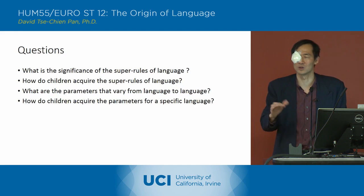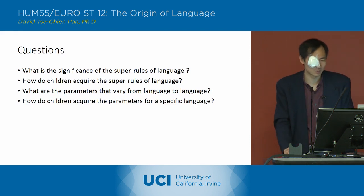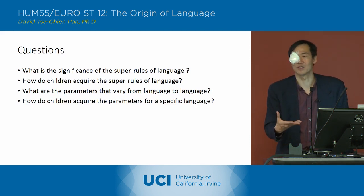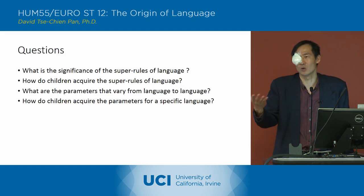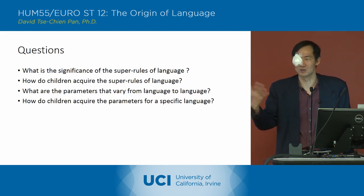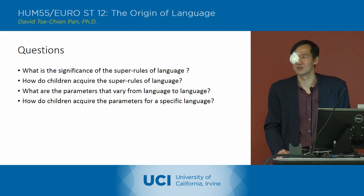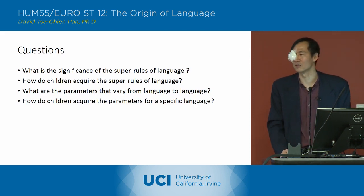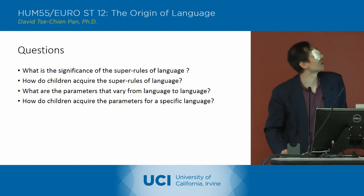If you have head-last, you'll have postpositions; if you have head-first, you have prepositions. How do children acquire the parameters for a specific language? They acquire them through experience — by listening to their parents or other people speaking — and they learn the parameters along with the specific vocabulary. We'll continue with this on Friday.